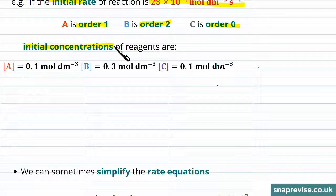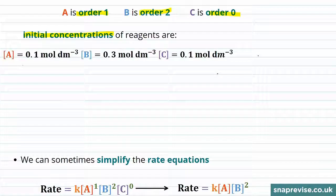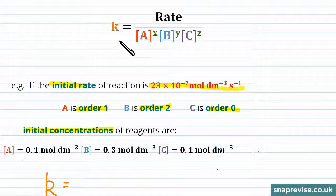We're then told the initial concentrations of each of these reactants. So for now we're not going to worry about the units, we're just going to put in the values. So if we want the value of K, we use this equation here.